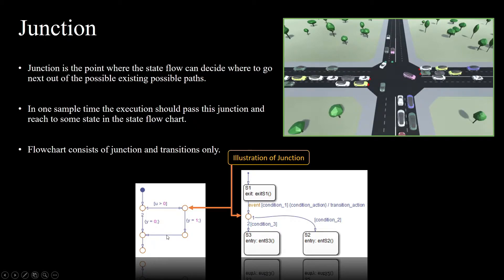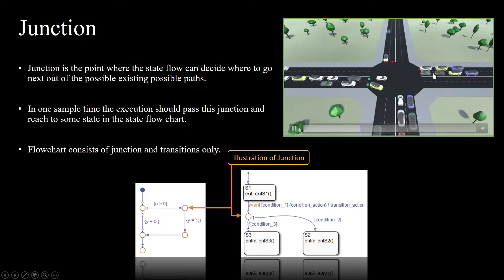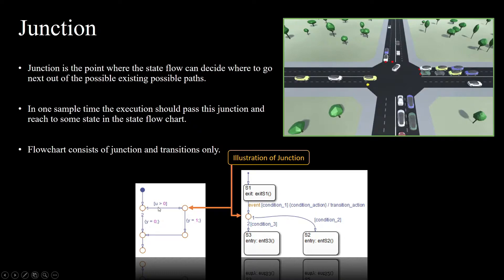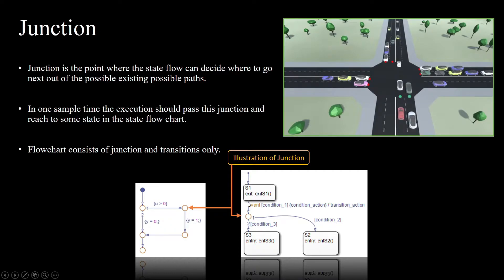The junction will stay until the condition is also satisfied for the next junction. The vehicle, as you can see in the video, will stop when the conditions are not satisfied — as you can see with the red lights. The same way happens in the flowchart: when u is greater than zero, then only the transition will happen and it will reach this junction.